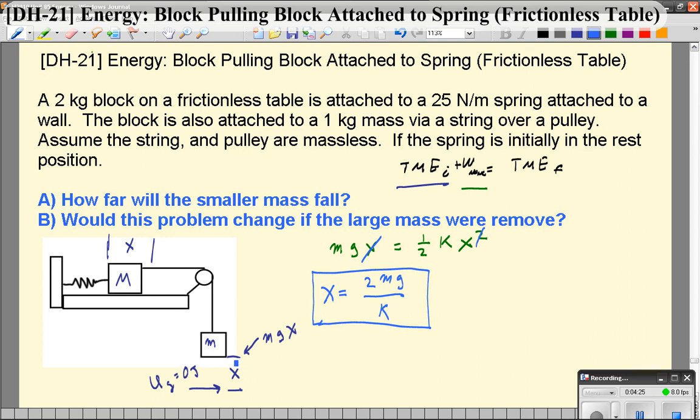It makes sense that this distance would get bigger if you hung a heavier mass, little m. It also makes sense that this distance would get bigger if you had a smaller k or a weaker spring.